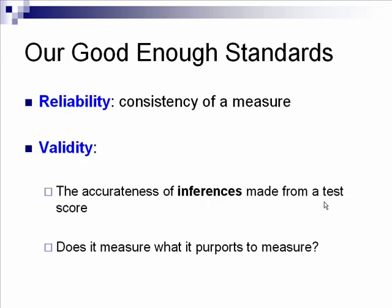What we need to decide is how much imperfection is okay to still trust our results. We have a couple of good enough standards, and they are called reliability and validity. Reliability has to do with the consistency of a measure. Validity is never about numbers — it's more of a conceptual construct. Think of it as whether the inferences made from a test score are accurate, and whether or not we measure what we purport to measure.